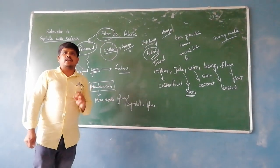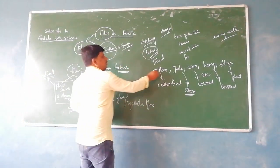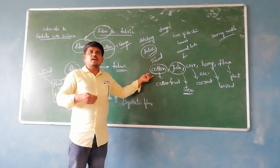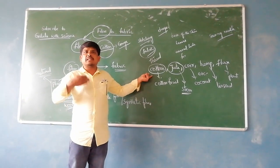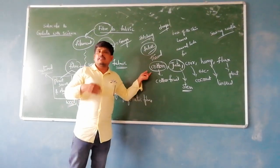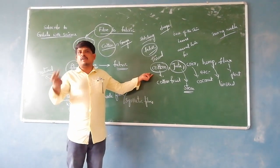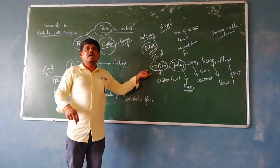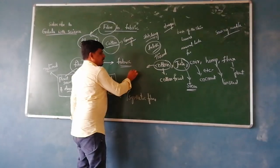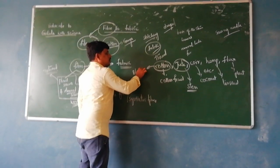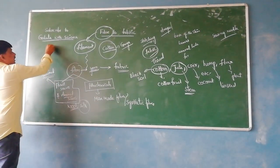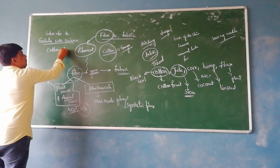I will start with cotton and jute. First of all, where is cotton grown? Cotton grows well in black soil.